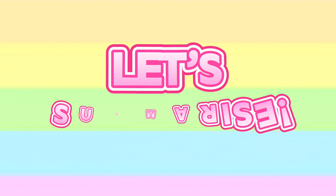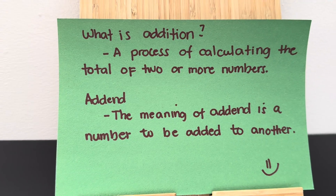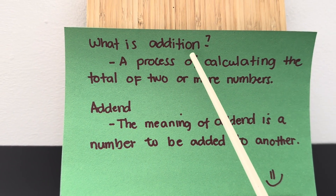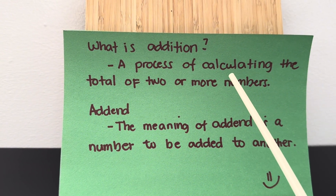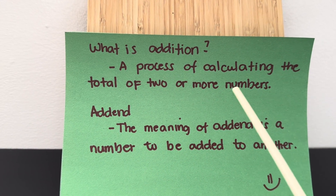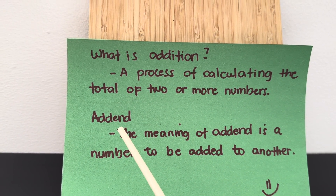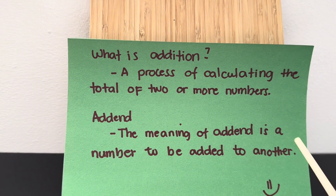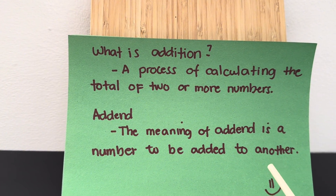Now join me and let's summarize. What is addition? Addition is a process of calculating the total of two or more numbers. An addend is a number to be added to another.